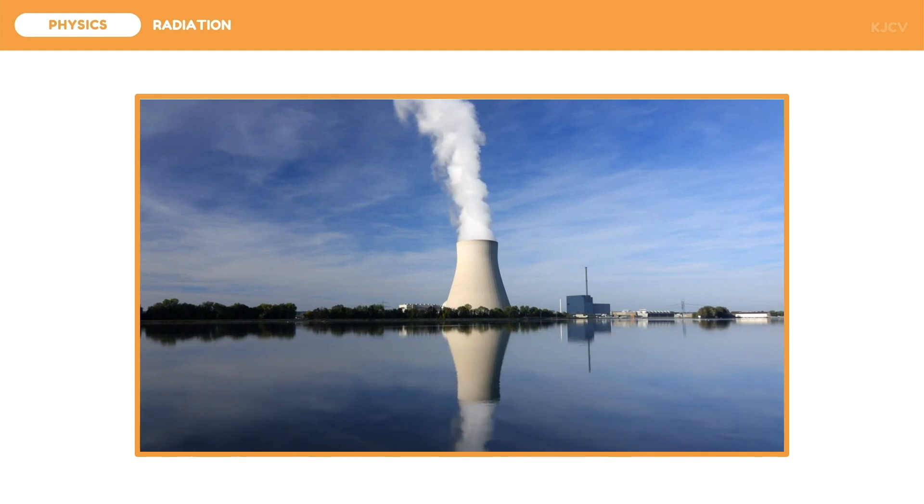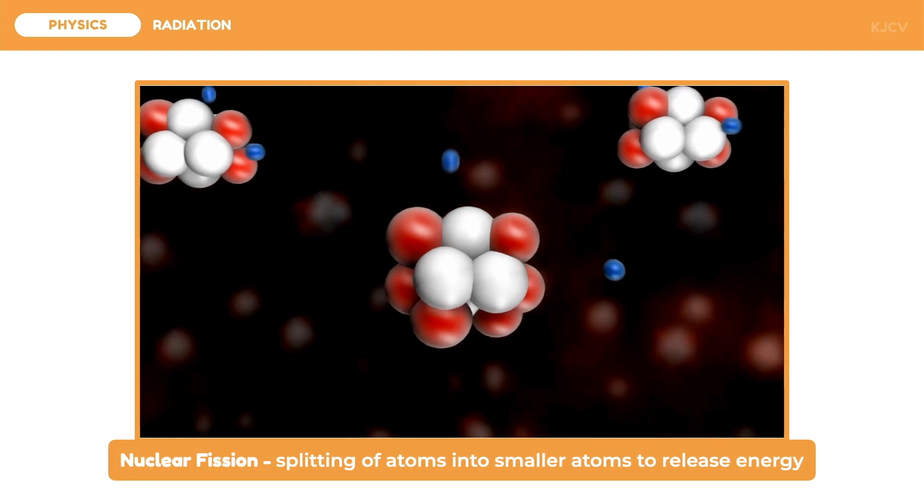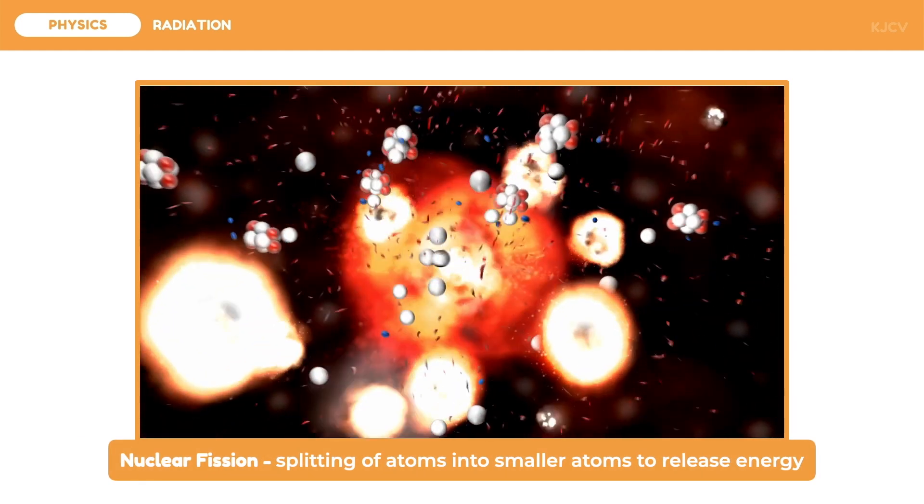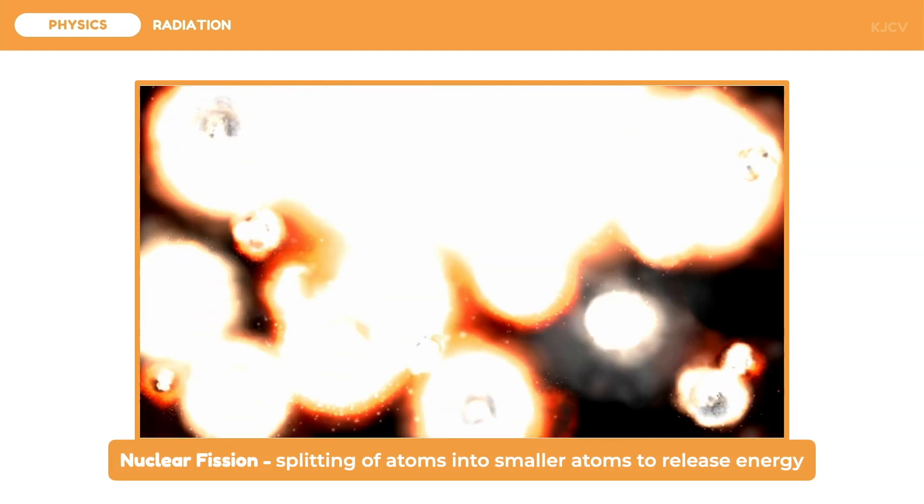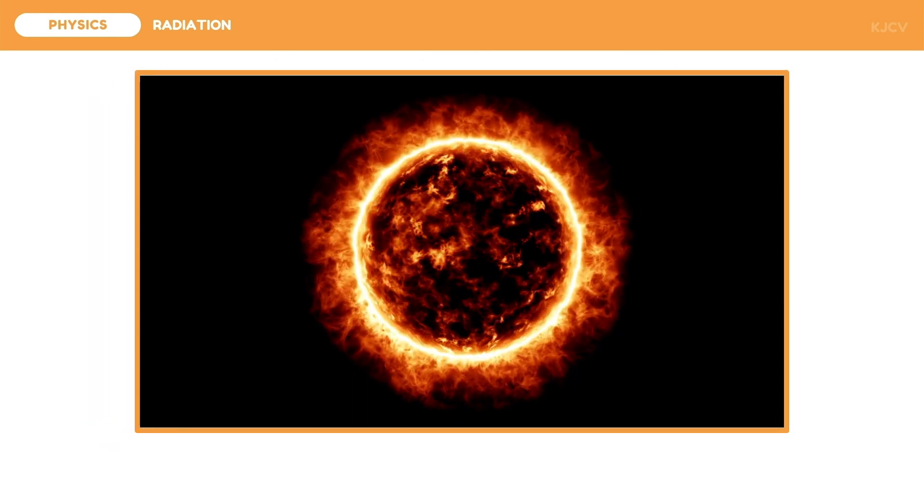Electricity is generated by the turbines which are moved by the steam from the water. This is where the nuclear reaction enters the scene. Water is heated through nuclear fission which occurs in the nuclear power plant's reactor that contains uranium fuel. In nuclear fission, atoms are split apart to form smaller atoms, releasing energy.